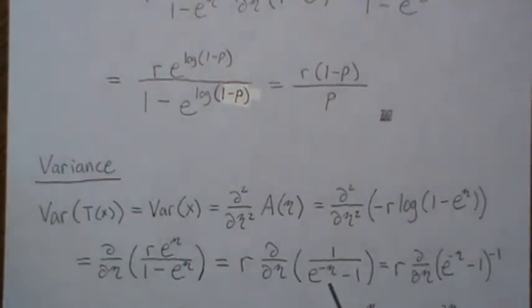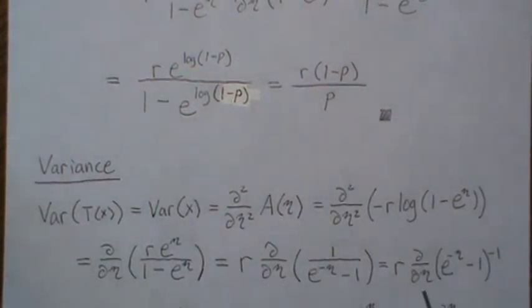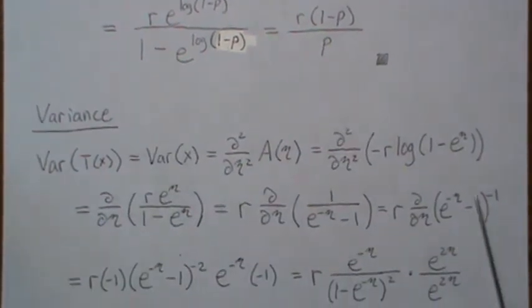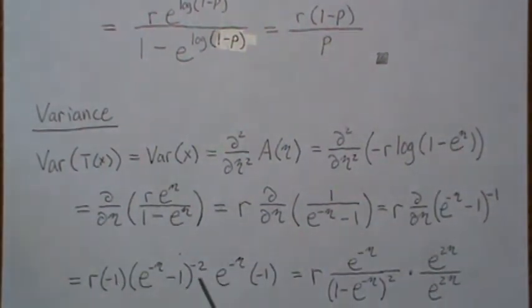But I like to trick it into, there's only one eta. So you can multiply top and bottom by e to the minus eta, and then we get this. I factor out the r, and then take this up to a minus one. Now take the derivative. So the minus one comes out front, then you subtract one, then take the derivative of the inside, and we get this.